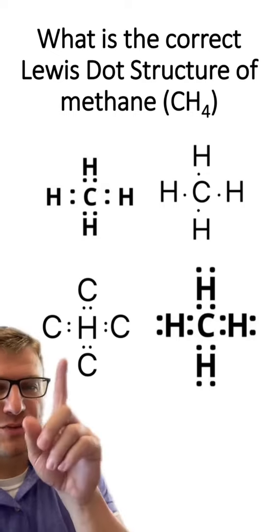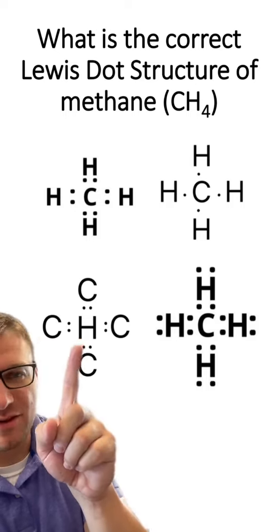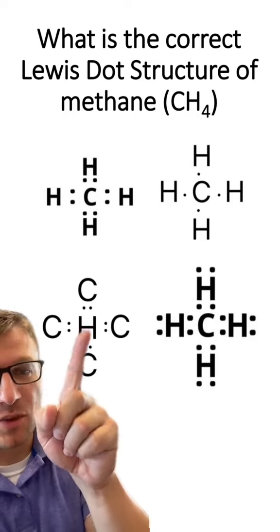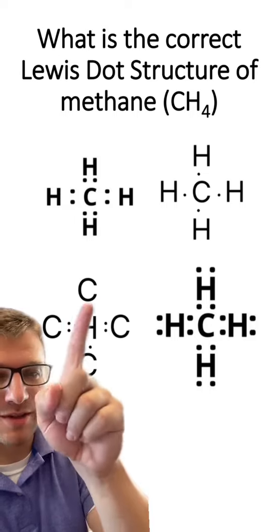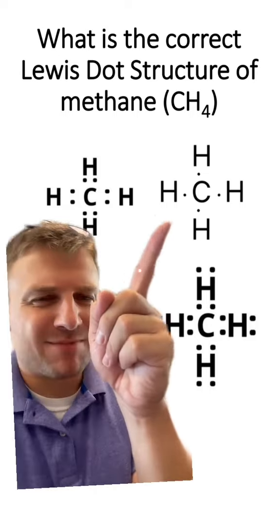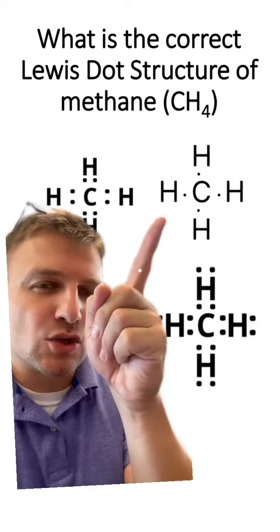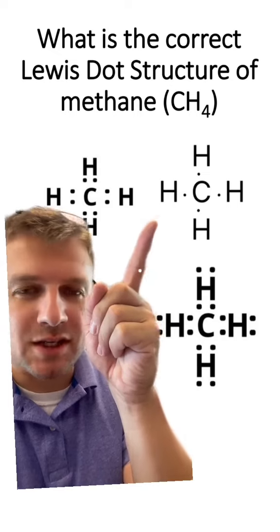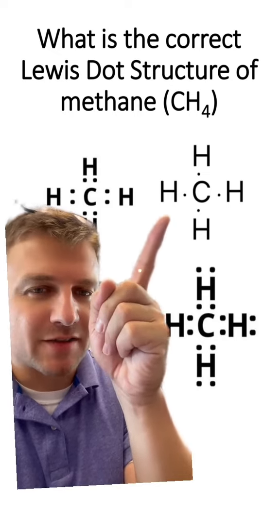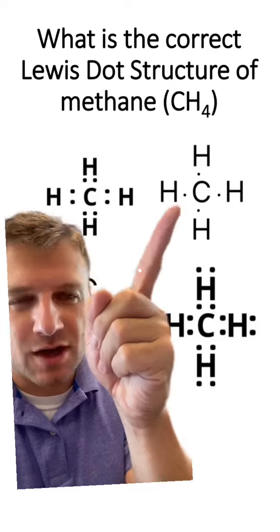Looking at our answers, we know this one's not correct because it doesn't have the right formula — there's only one hydrogen and four carbons. So now we're down to these three. This one can't be correct because there needs to be two electrons between bonding pairs of atoms, and there's only one, so this one's not right.